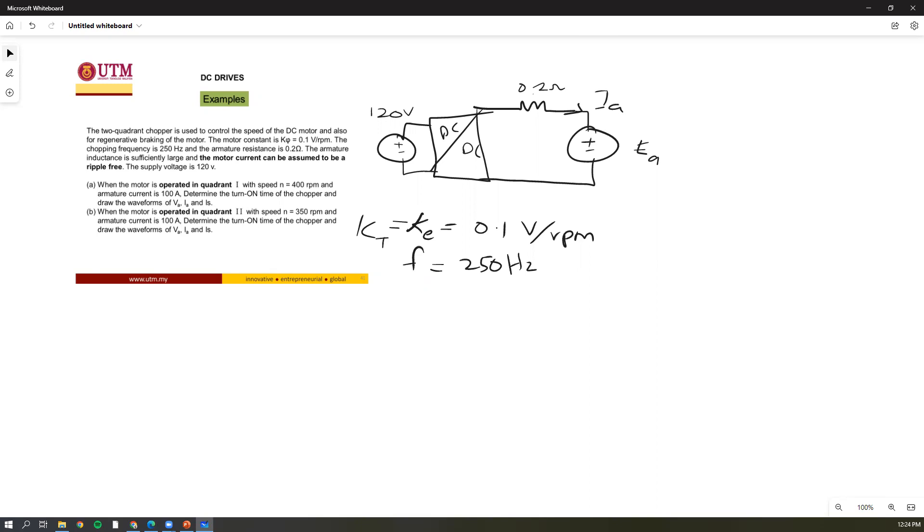The first question: when the motor is operated in quadrant number one with speed of 400 rpm and the armature current is 100 amperes, determine the t-on of the chopper and draw the waveform. Right now the speed is 400 rpm and the armature current is 100 amperes.